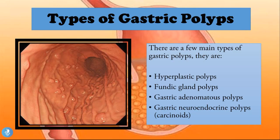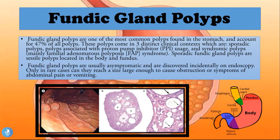What are the types of gastric polyps? There are a few main types: the hyperplastic polyps, the fundic gland polyps, the gastric adenomatous polyps, and the gastric neuroendocrine polyps or carcinoids. First, let's talk about the fundic gland polyps.